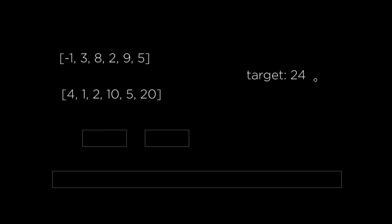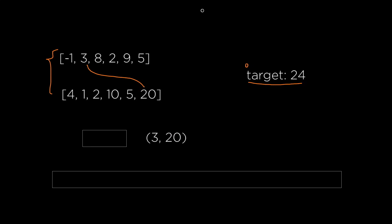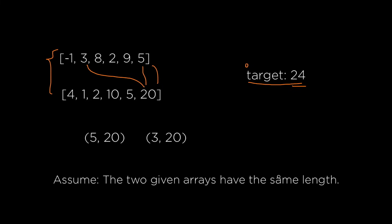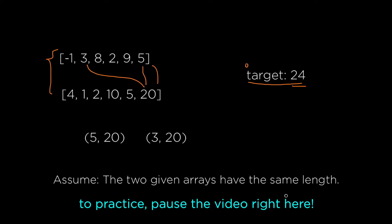Here's the problem we're going to solve today. You're given two integer arrays — for example, these two right here — and you're also given a target, which is just a number. The problem is writing a function that takes these three pieces of information and returns a pair of numbers, one from each array, whose sum is the closest to the target. In this particular example, you want to find either the pair 3 and 20, or 5 and 20, giving sums of 23 or 25 — the closest you can get to 24. For simplicity, let's assume the two arrays always have the same length.